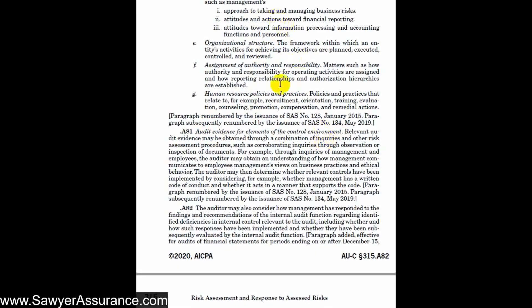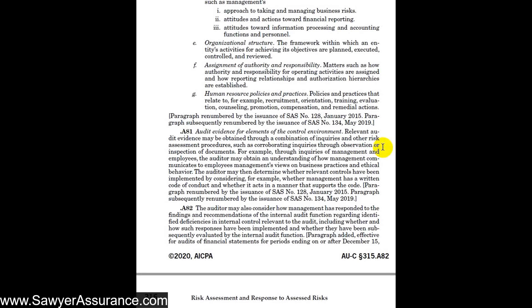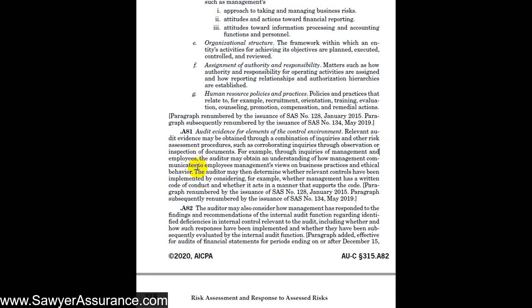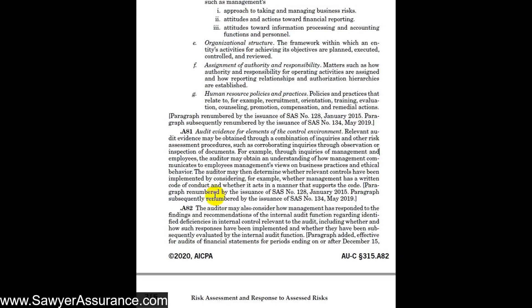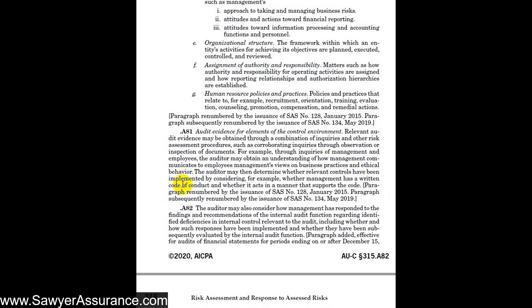We might talk to management or governance about how each of these things is accomplished in their organization. We might also observe or inspect documents — for instance, observing a staff meeting or board meeting, or inspecting the employee handbook. On their website, perhaps there's a mission statement, or employees may be required to sign a page in the handbook confirming they will follow policy. Perhaps there's a code of conduct we can get a copy of, which would tell us whether all of this has been implemented.